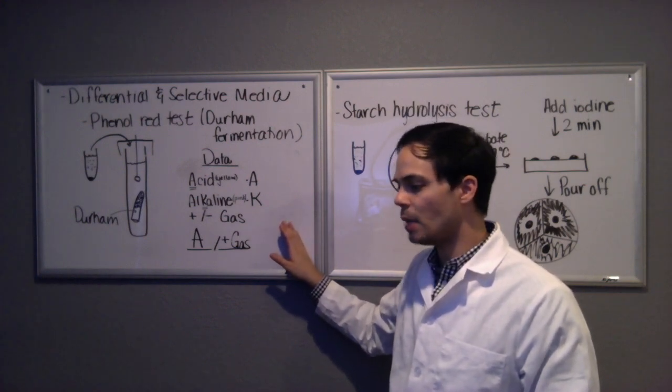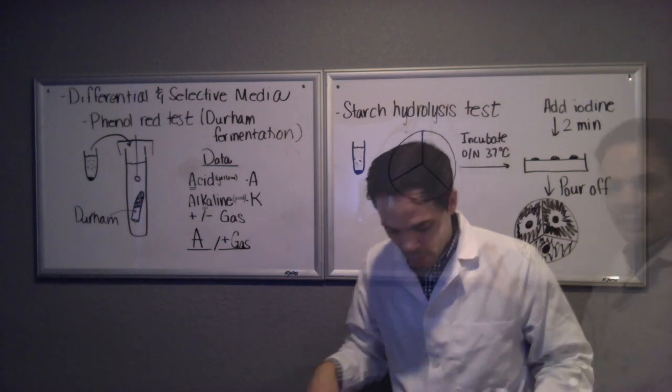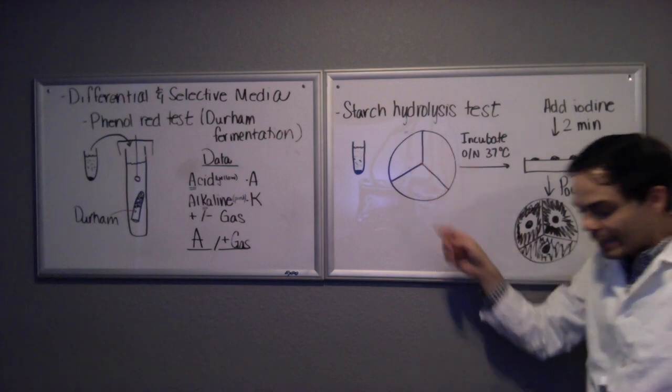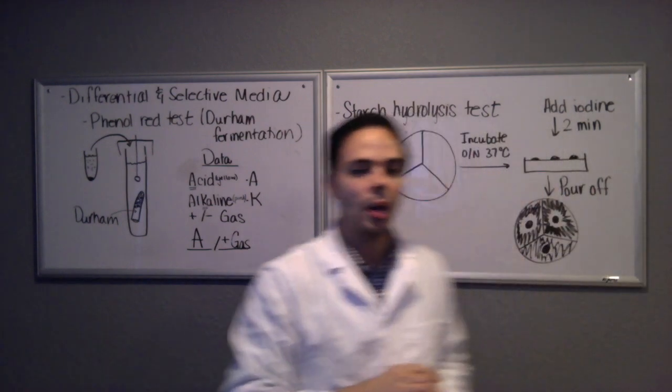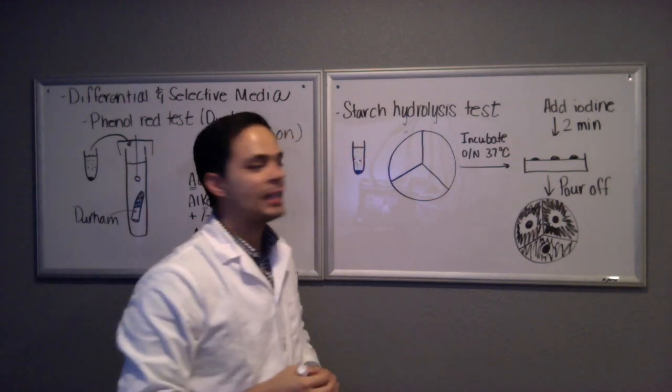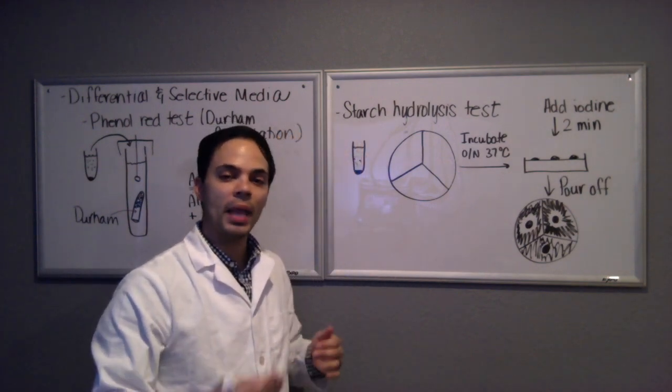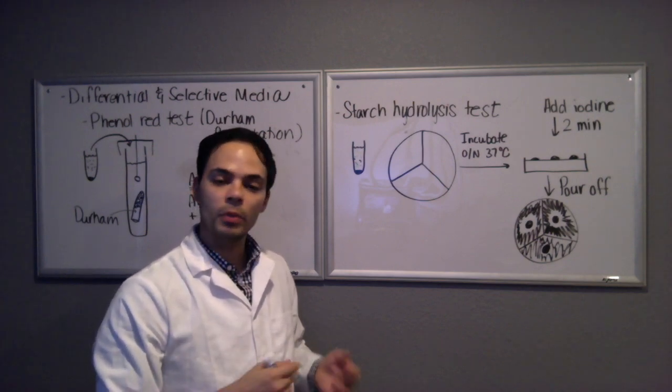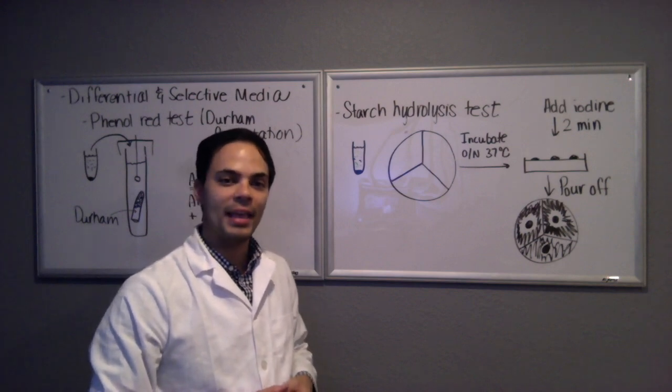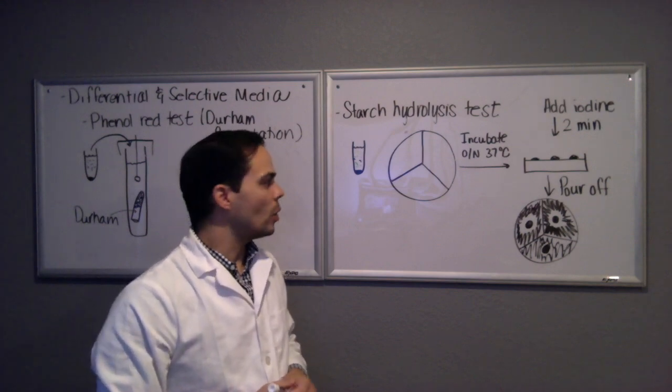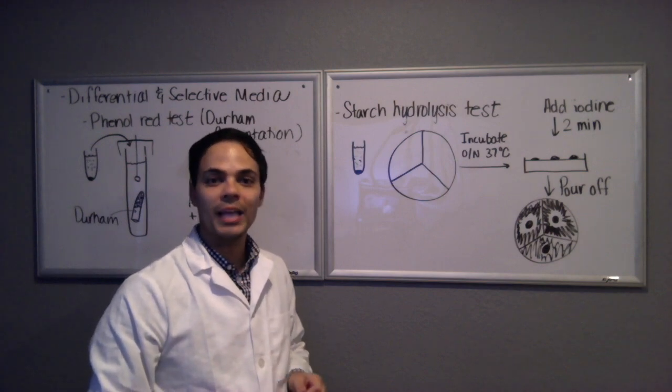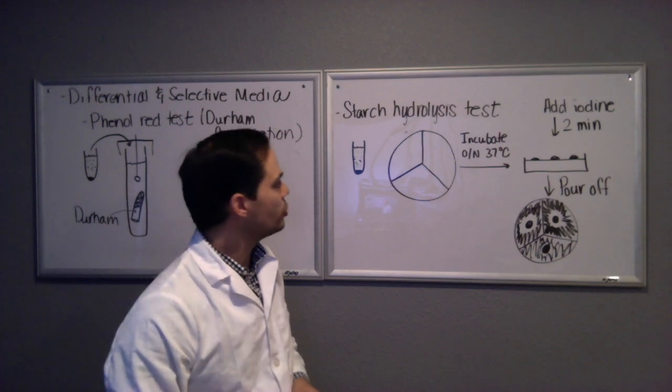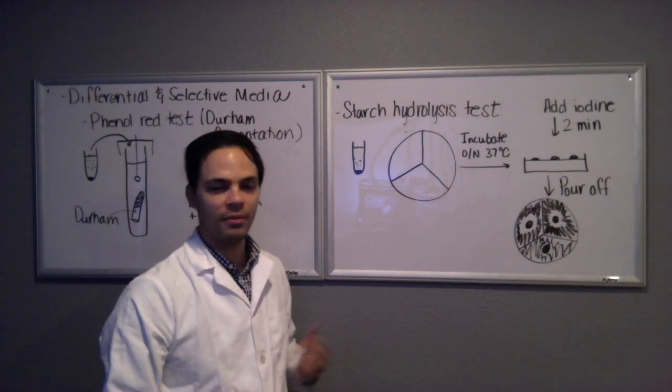Next let's discuss the starch hydrolysis test. It uses a medium that contains starch in it, which is a complex carbohydrate, and we're asking the question: will the bacteria be able to break down the starch into simple sugars? In order to do that it must have the enzyme alpha amylase or 1,6 oligo glucosidase. Not all microbes have them so it's a good way to differentiate between the bacteria.